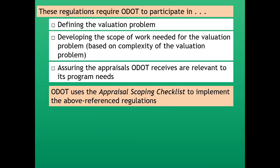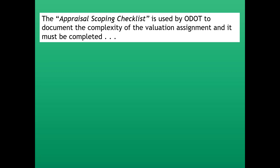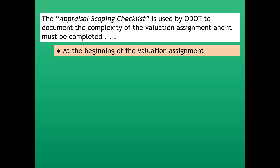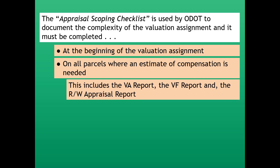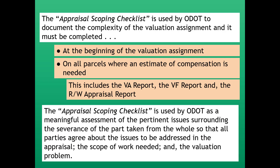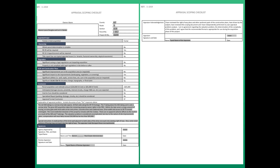ODOT uses the Appraisal Scoping Checklist to implement those regulations. The checklist is used to document the complexity of the valuation assignment, and it must be completed at the beginning of the valuation assignment on all parcels where an estimate of compensation is needed. This would include the value analysis report, the value finding report, and the right-of-way appraisal report. The checklist serves as a meaningful assessment of the pertinent issues surrounding the severance of the part taken from the whole, so that all parties agree about the issues to be addressed in the appraisal, the scope of work needed, and the valuation problem.